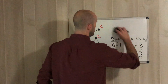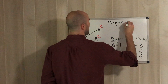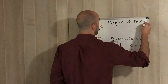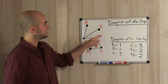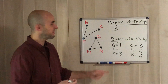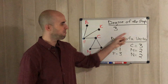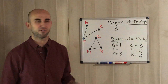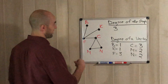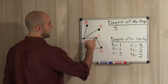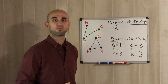We also have something called the degree of the graph. The degree of the graph is even easier — it's just whichever vertex degree is the greatest. Looking at our degrees here, the degree of the graph is 3, because 3 is the greatest degree. If the biggest degree were 7, the degree of the graph would be 7. It's always just the biggest number.